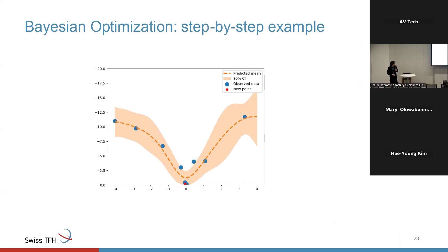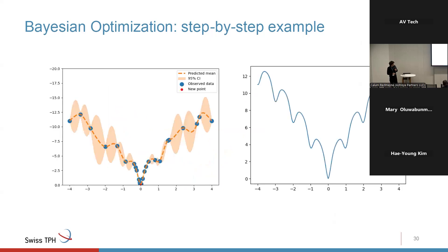Skipping a few iterations, after about 20 to 30 iterations we find the minimum of this simple 1D function. You can also see the real shape of the function on the right — since this is a toy function we know its shape — and the Gaussian process was able to capture that shape, even though our goal is just to find the minimum.